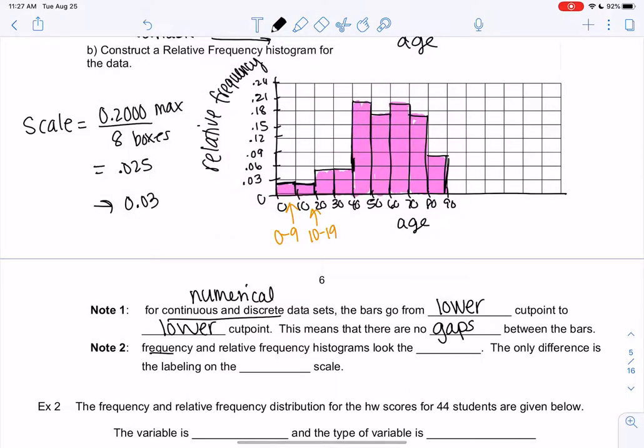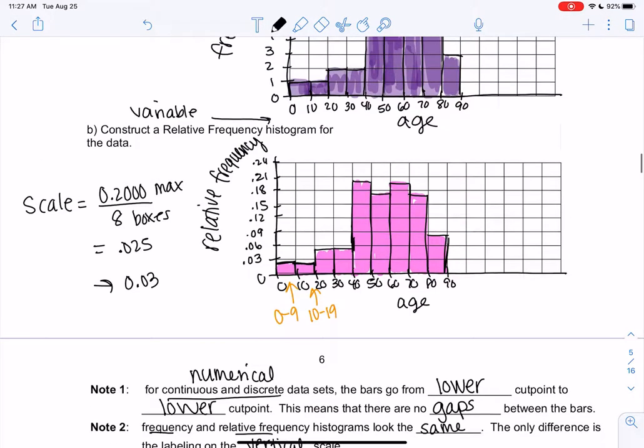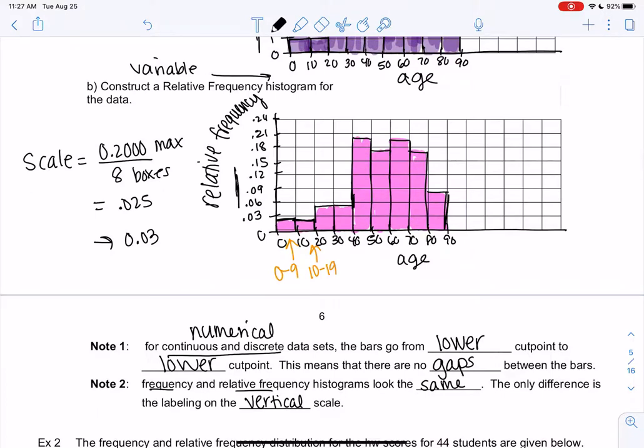So frequency and relative frequency histograms look the same. The only difference is the vertical scale. So the numbers on the vertical scale are different. Otherwise it's the same. And that's a histogram.